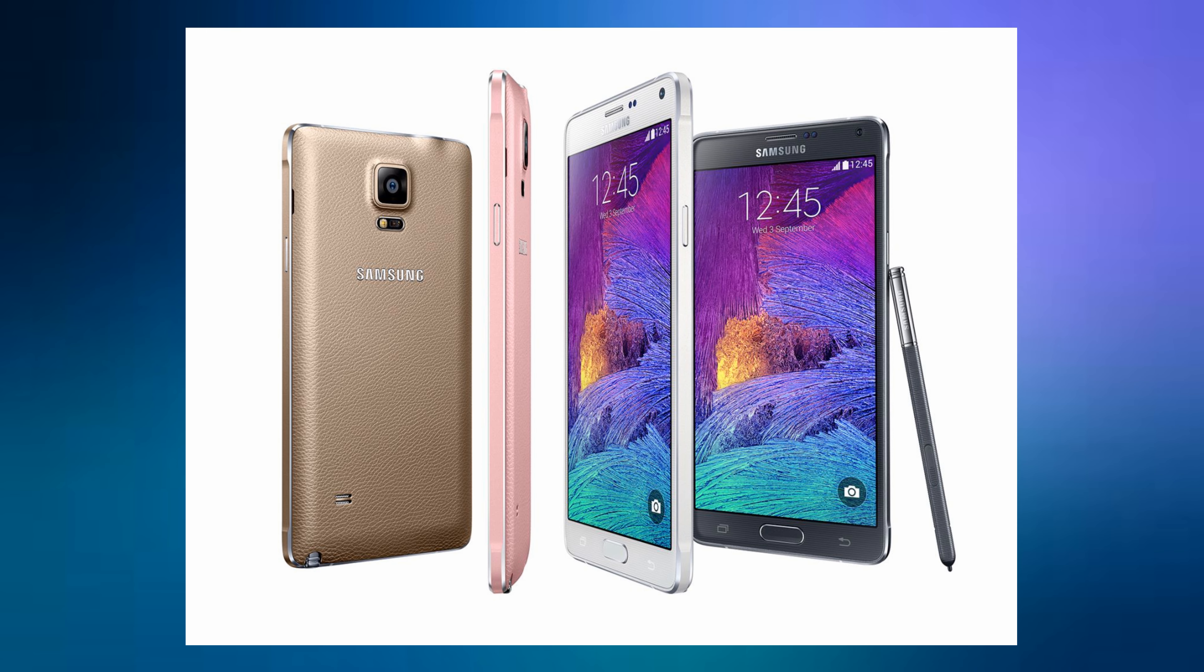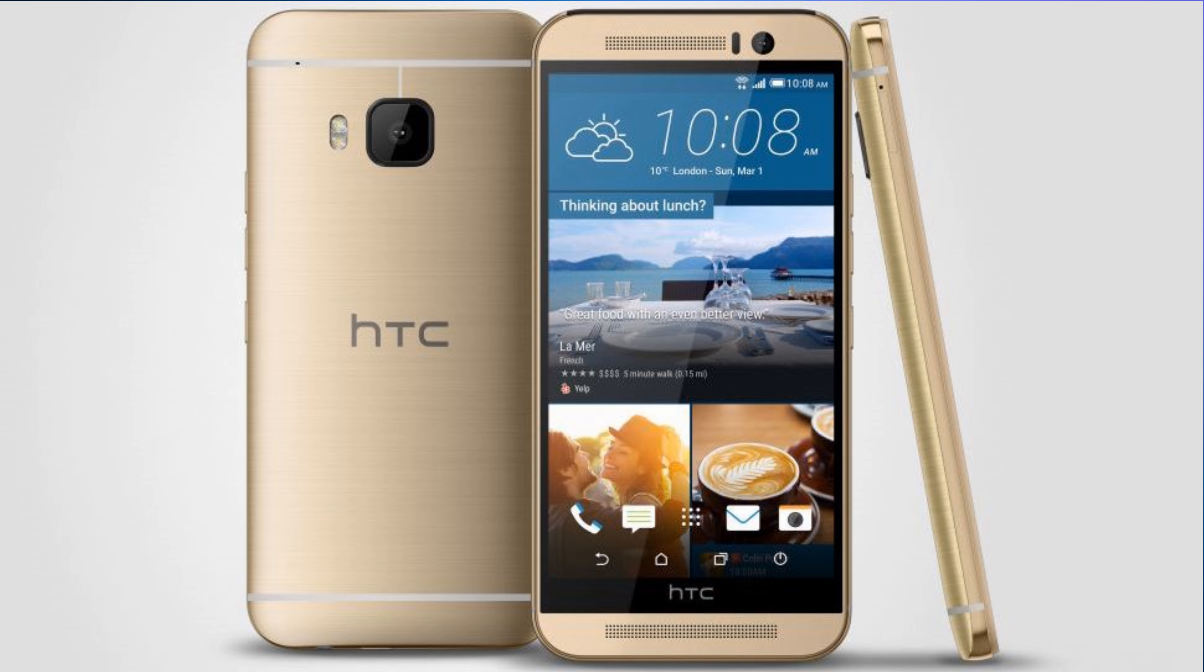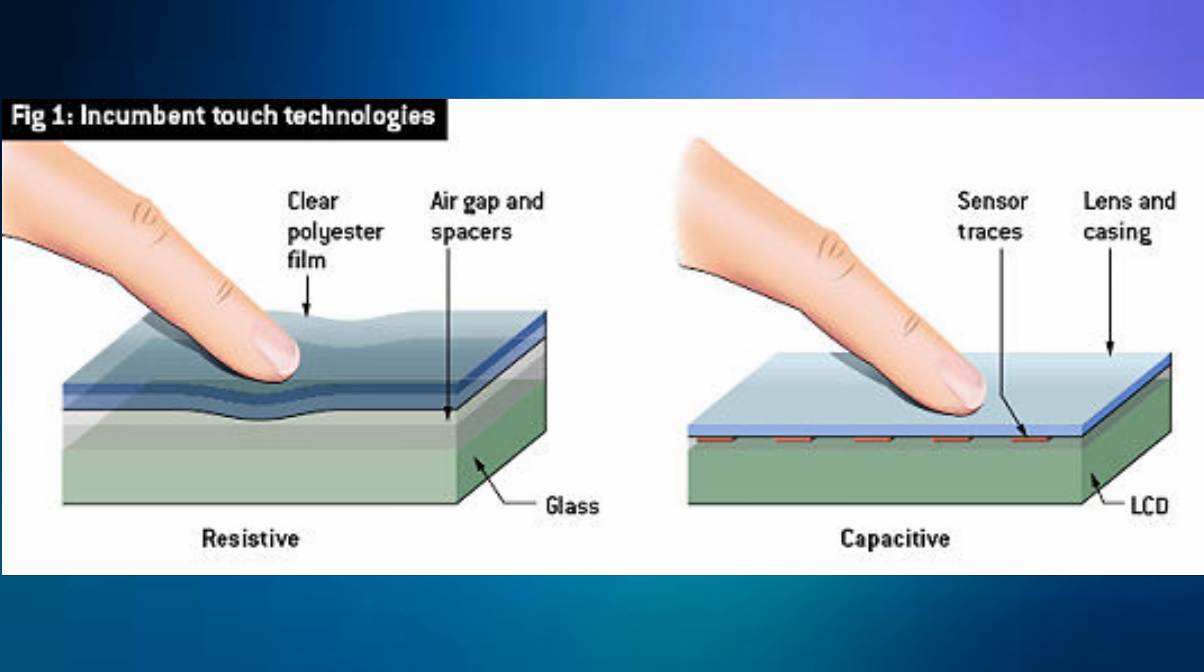So now I'll go into depth. A resistive touchscreen uses a number of layers and works by using the amount of pressure applied to the screen. When the screen is pressed, the outer layer is pushed onto the next layer and then input is registered.